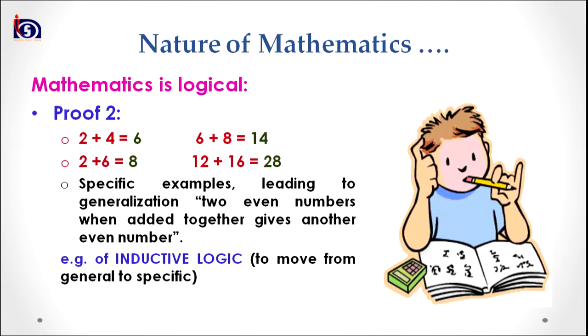Now comes inductive logic. Look at the proof on your screen. I have given four equations: 2+4=6, 6+8=14, 2+6=8, and 12+6=28, and so on. If we are drawing a generalization from these specific examples, we are using inductive logic — that is, we are moving from specific to general.